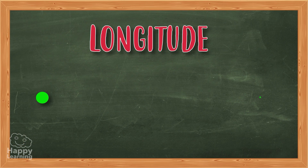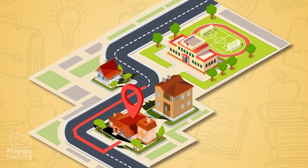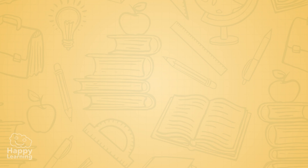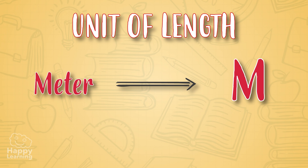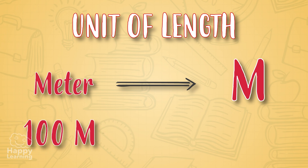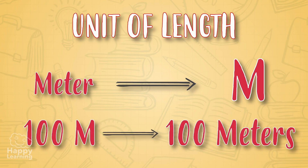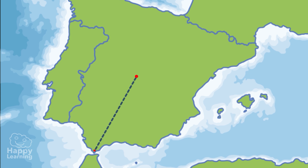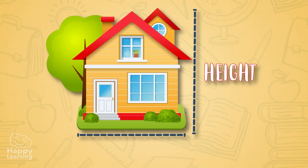As we said before, longitude is the distance there is between two points, like the distance between your house and school. The most important unit of length is the metre, represented by the letter M. The metre measures distances, but it also measures things such as height and width.